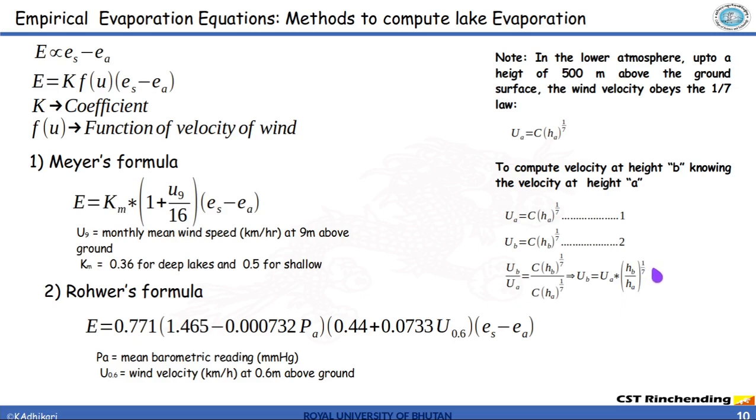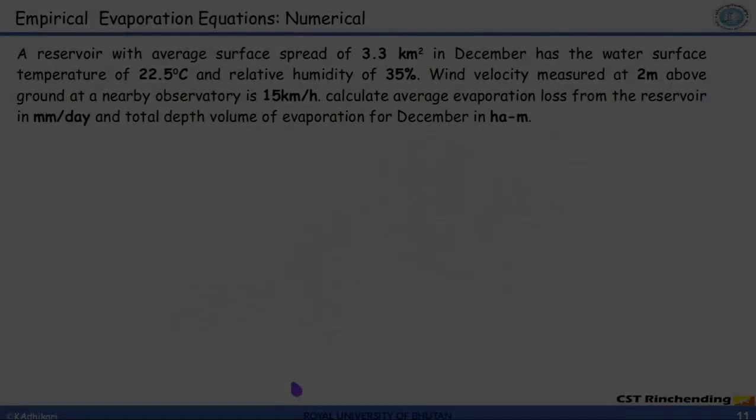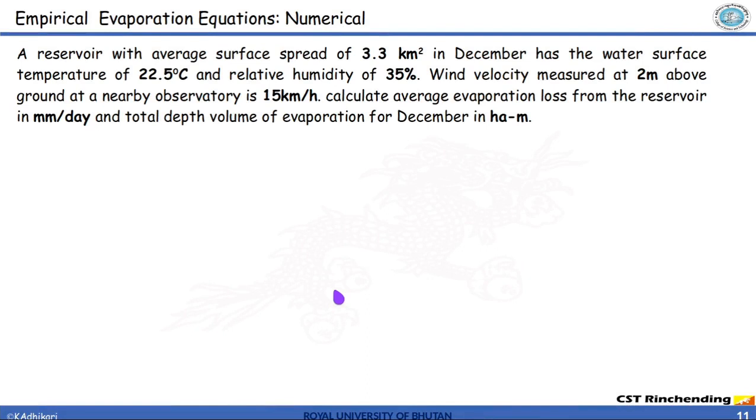So this equation is used to extrapolate the velocity. Okay, let's solve a numerical problem. A reservoir with an average surface spread of 3.3 kilometers squared in December has water surface temperature at 22.5 degrees centigrade and relative humidity of 35 percent. Wind velocity measured at 2 meters above the ground surface at a nearby observatory is 15 km per hour. Calculate average evaporation loss from the reservoir in mm per day and total volume of evaporation for December in hectometer.